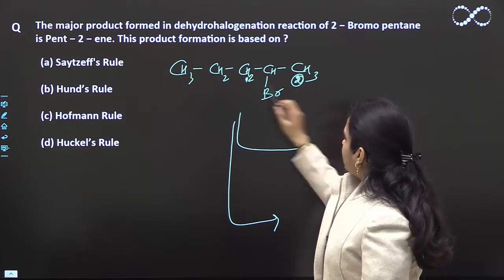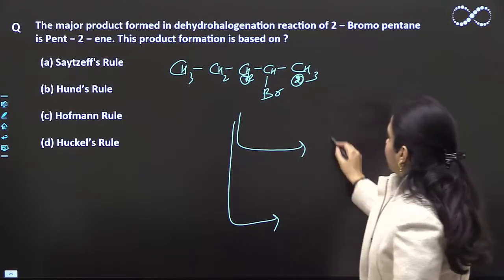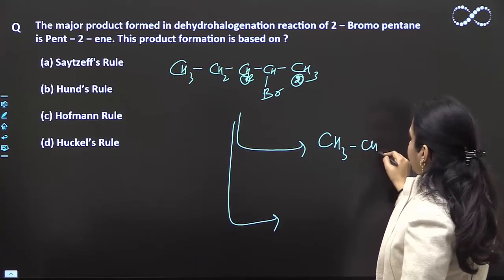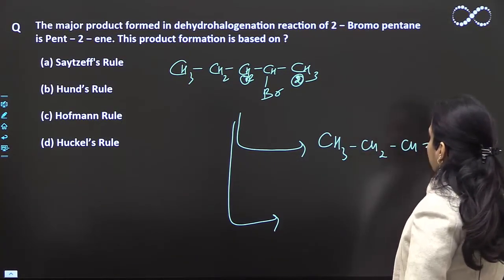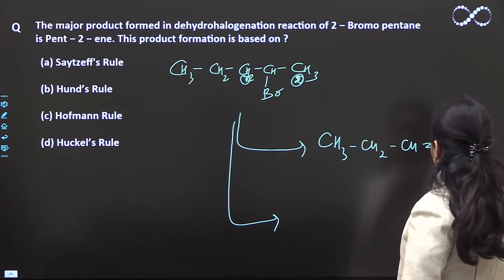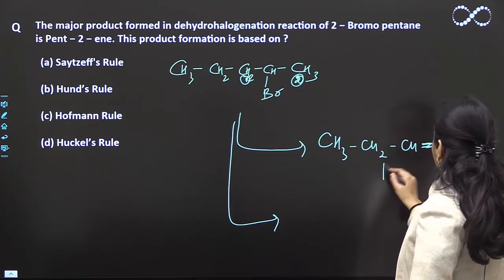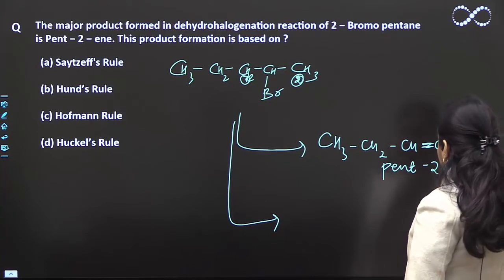Suppose hydrogen goes from here, then this is the first product. The first one will be CH3, CH2, CH double bond CH, CH3. This is your pent-2-ene.